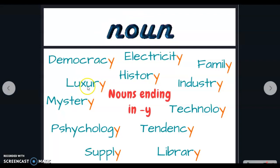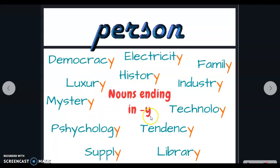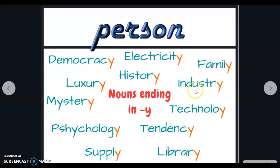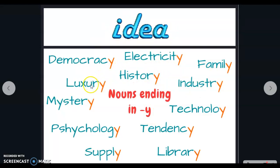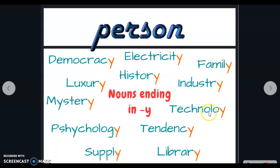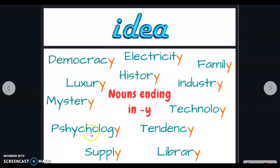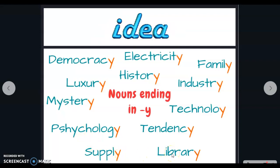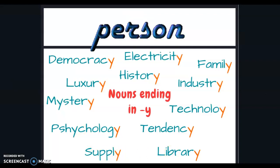In this opportunity I share with you some examples. Those nouns that end in Y such as democracy, electricity, family, industry, history, luxury, mystery, technology, tendency, psychology, supply, and library. I don't know if it comes to your mind any other noun that ends in Y.